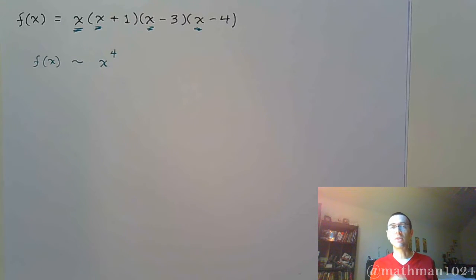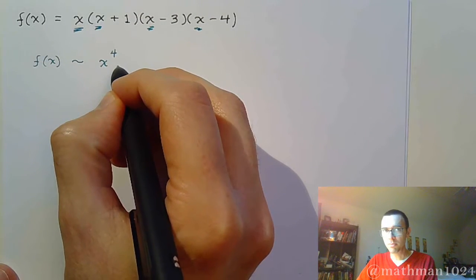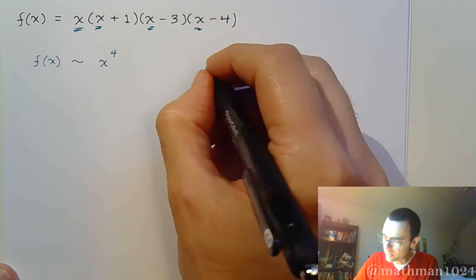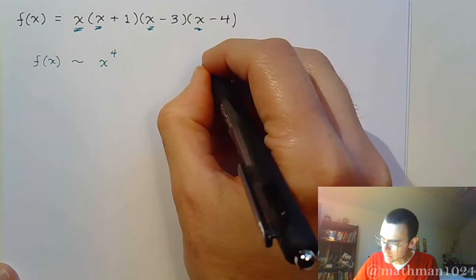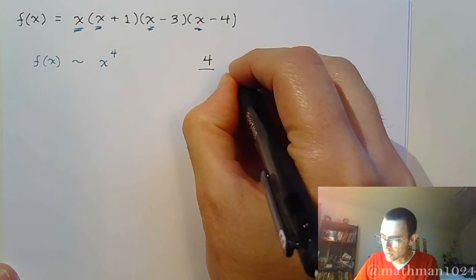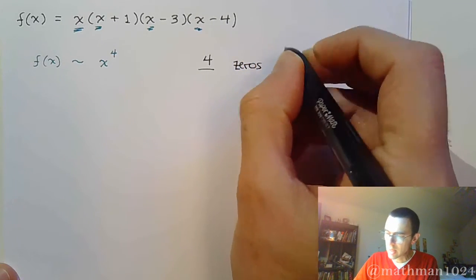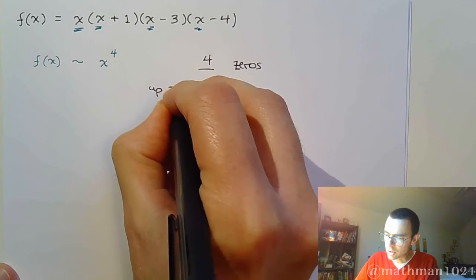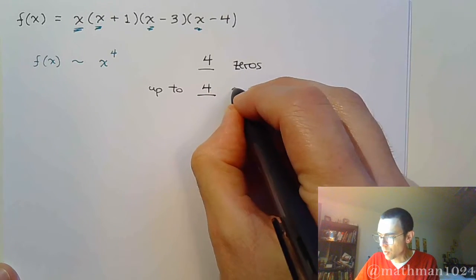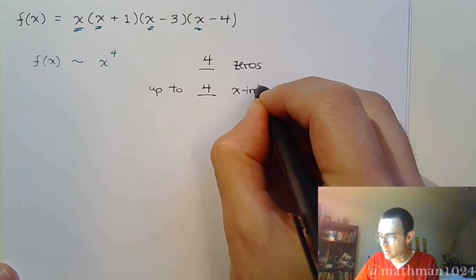Again, I don't care what the other stuff is right now. I just care about the main guy. So if he's degree four, that means that we're going to have four zeros. That means we're going to have up to four x-intercepts.